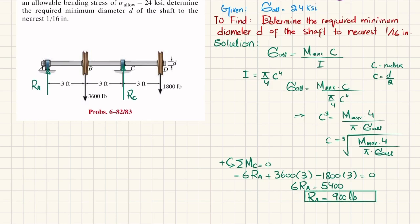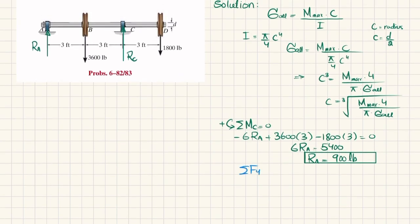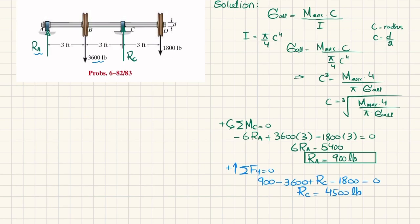Now we find R_C using the sum of forces in the y-direction equal to zero, taking upward as positive. R_A (+900) − 3600 + R_C − 1800 = 0. From here, R_C = 4500 pounds.